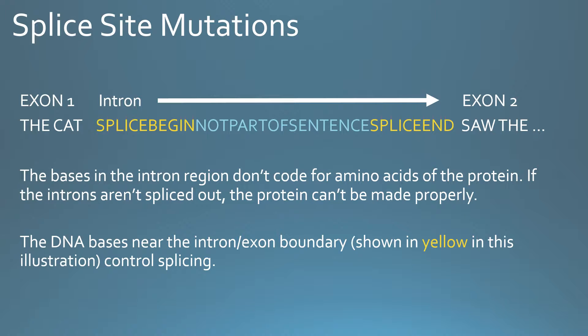In the sentence analogy, we take the first part of our sentence and say that 'the cat' — the first two words — is the first exon, and then 'saw the rat' etc. is the second exon. In between is an intron, which has special sequences of DNA at the beginning and end. We illustrate these with 'splice begin' and 'splice end,' which tell the cell when making the protein where the beginning and end of the part to be removed is, to assemble the final version of the RNA before making the protein.